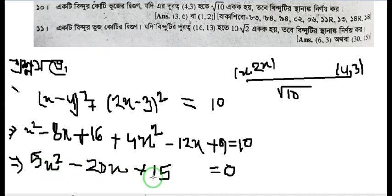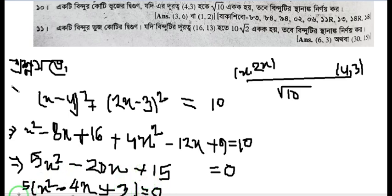Now we need to find the value of x. We can factor out 5 as a common factor. Dividing everything by 5 gives us x² minus 4x plus 3 equals 0.